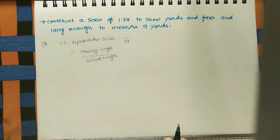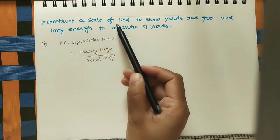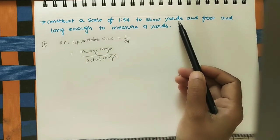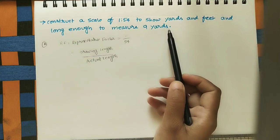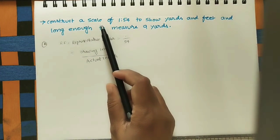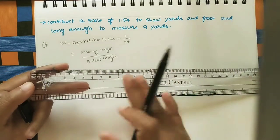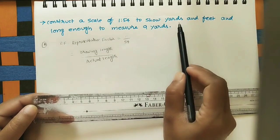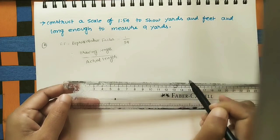Welcome to my channel. Let us construct a scale for the given data. The question is: construct a scale of 1 is to 54 to show yards and feet, and long enough to measure 9 yards. We have to construct one scale that we can measure using it — it should show yards and feet. This scale is showing centimeters and millimeters, but our scale should show yards and feet.